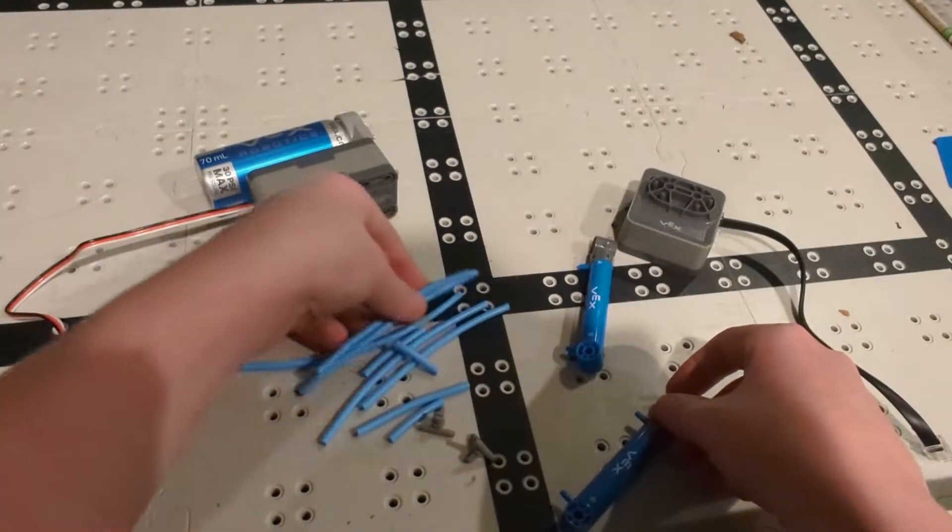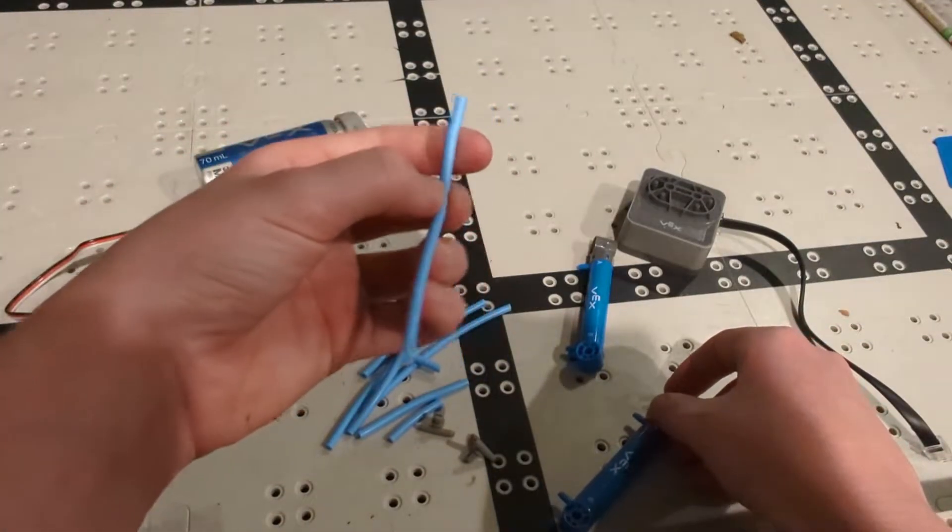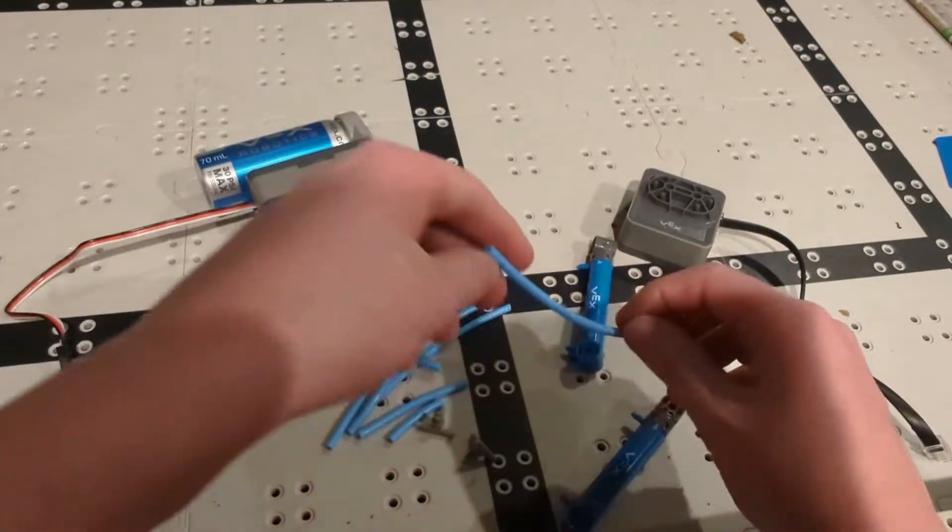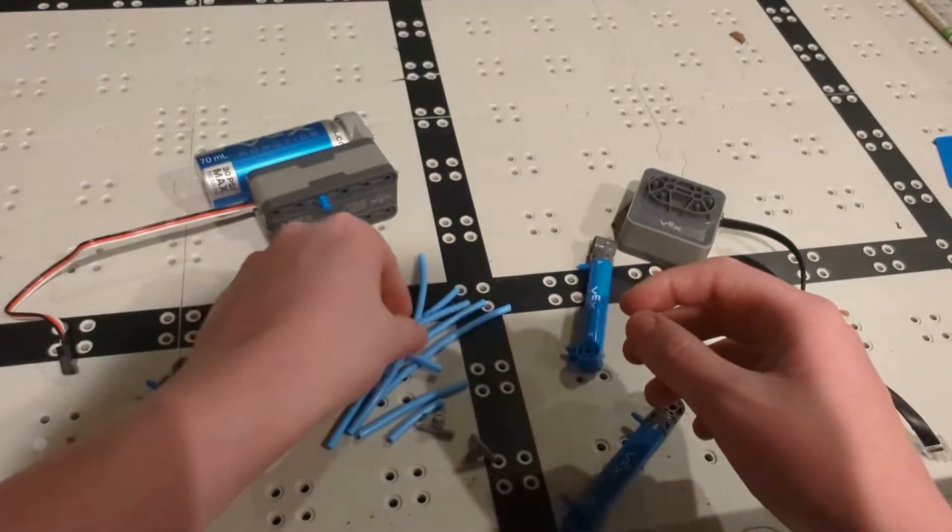And so right here is the tubing, and this basically just helps connect everything together and make sure the air can flow throughout the system.